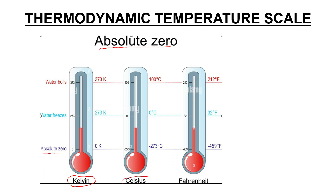In the Celsius scale, absolute zero is minus 273.15 degrees Celsius. The melting point of ice is 0°C and the boiling point of water is 100°C. In the Kelvin scale, absolute zero is defined as zero Kelvin. The ice point is 273 Kelvin and the boiling point of water is 373 Kelvin.